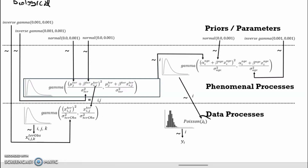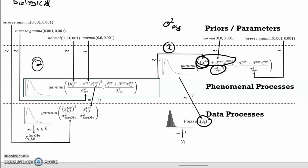Bird-specific values of fecundity are deemed to have arisen as random draws from a gamma distribution with a given mean and a variance sigma-squared. That's our first submodel. The second submodel says that the maximum fecundity of the bird arises as a random draw from a gamma distribution with its own mean and variance. Those are the phenomenal processes.